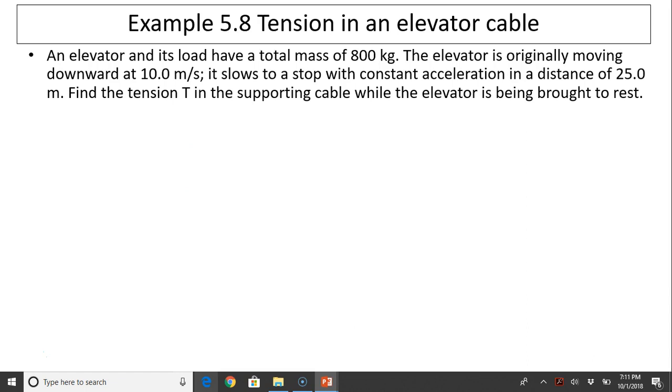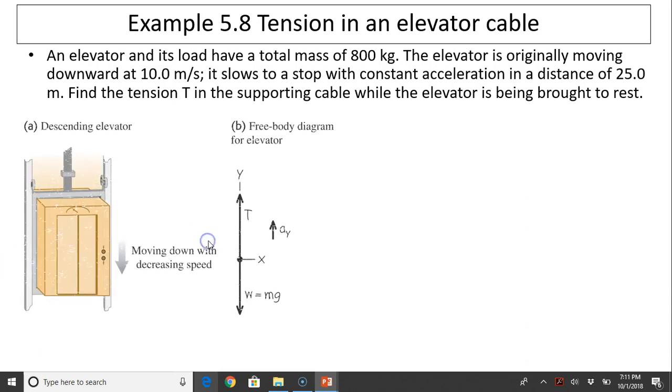Another example, tension in an elevator cable. An elevator and its load have a total mass of 800 kilograms. The elevator is originally moving downward at 10 meters per second. It slows to a stop with constant acceleration in a distance of 25 meters. Find the tension T in the supporting cable while the elevator is being brought to rest. Sketch the diagram, the elevator, and the free body diagram. On the elevator, there's tension acting upward and gravity acting downward. That's the only two forces.